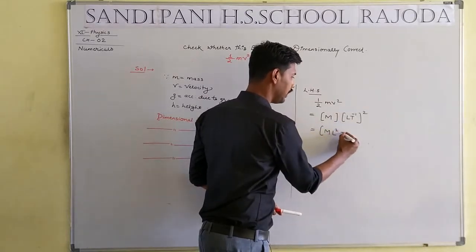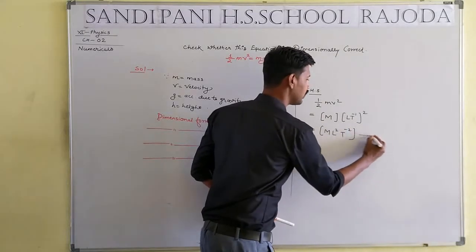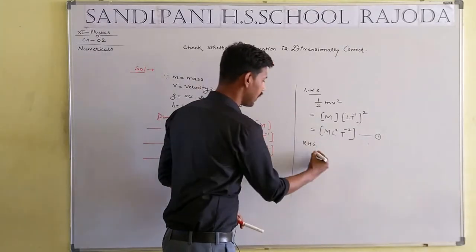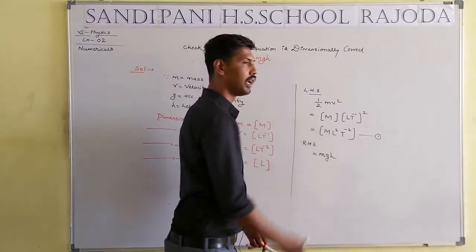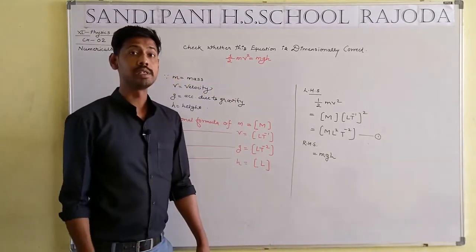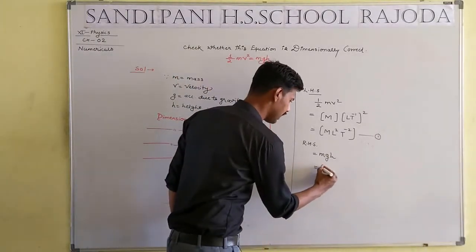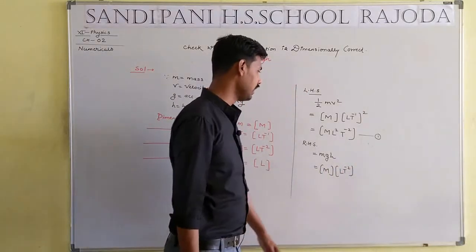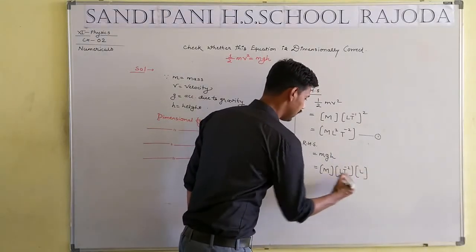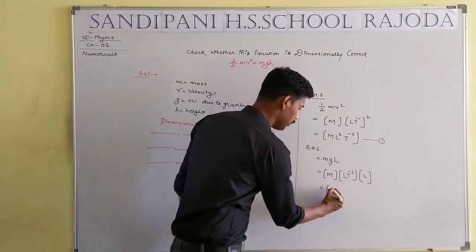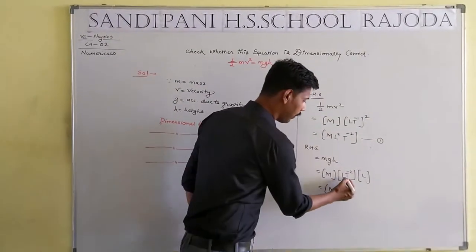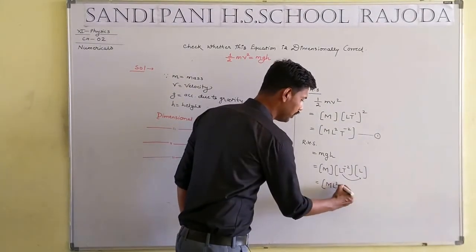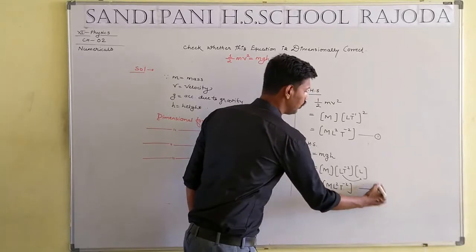That is Equation 1. Now taking the RHS, which is mgh. m is mass represented by M, g (acceleration due to gravity) is denoted by LT⁻², and h (height) is denoted by L. Combining: M × L × L = ML² and T⁻², giving us ML²T⁻². This is Equation 2.